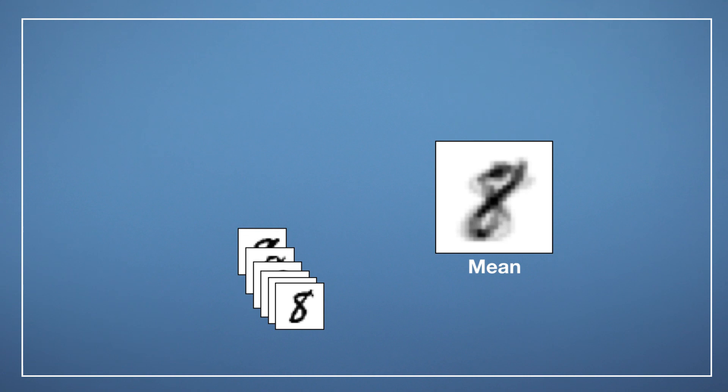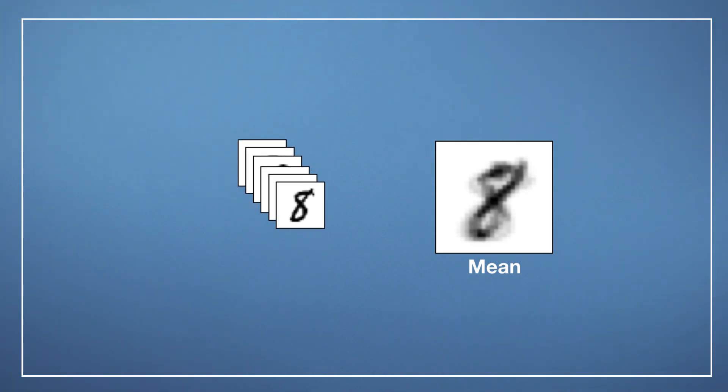When we add more images to our dataset, the average digit becomes a bit more blurry. And if we take all eights in our dataset, we get this eight as the average image.